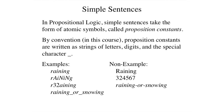For example, raining, spelled as shown here, is a proposition constant. As are raining, spelled with lower and uppercase letters but beginning with a lowercase letter, R32 raining, and raining underscore or underscore snowing.